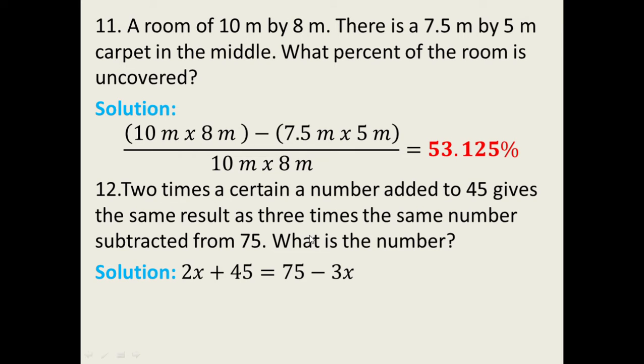Three times the same number, so that is 3x. Take note of this that we need to subtract 3x from 75. So what will happen that will become 75 minus 3x. So our equation, we can now have an equation of 2x plus 45 is equal to 75 minus 3x.